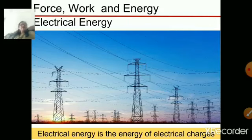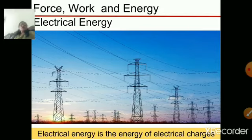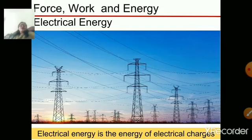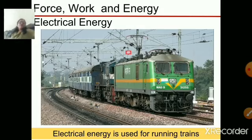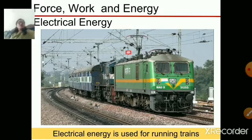Another form of energy is electrical energy. With the help of electricity, we are able to run many gadgets in our home. Electrical energy is the energy of electrical charges that produces electricity. With the help of that electricity, we are able to run many gadgets in our day-to-day life — even a train. Nowadays, we do not run the train with heat energy; we run it with electrical energy. The engines are now electric engines, and you can see the train is using electrical energy.